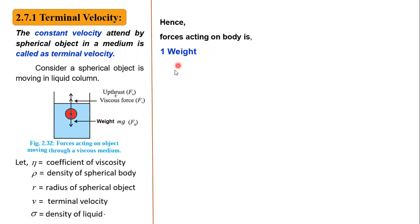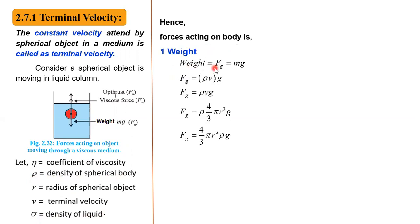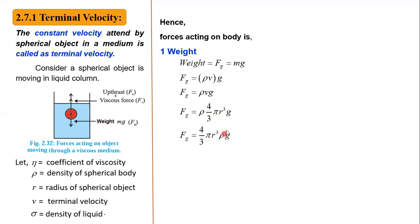The first force is weight, given by the formula mg. We can write m as density times volume, so weight equals rho times volume times g. The volume of a spherical object is 4/3 pi r cubed, so weight equals 4/3 pi r cubed rho times g. This is the force acting on the spherical object in the downward direction.